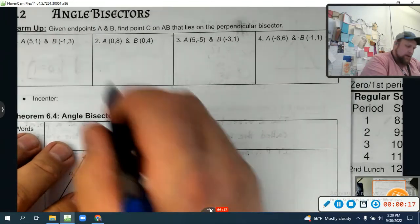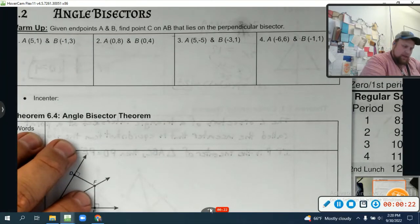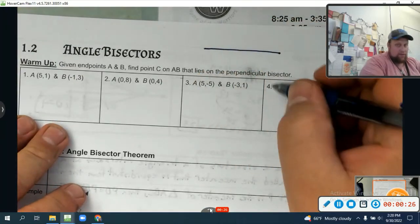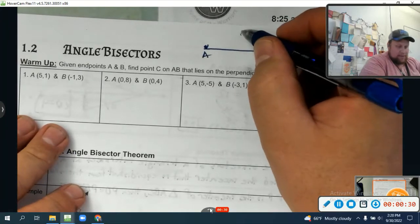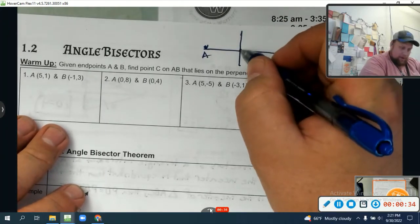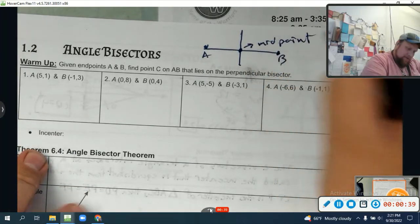Let's go. Given points A and B, find point C on AB that lies on the perpendicular bisector. Well, here's the deal. If I have two points A and B, a bisector cuts a line in half, so that point right there is called the midpoint.